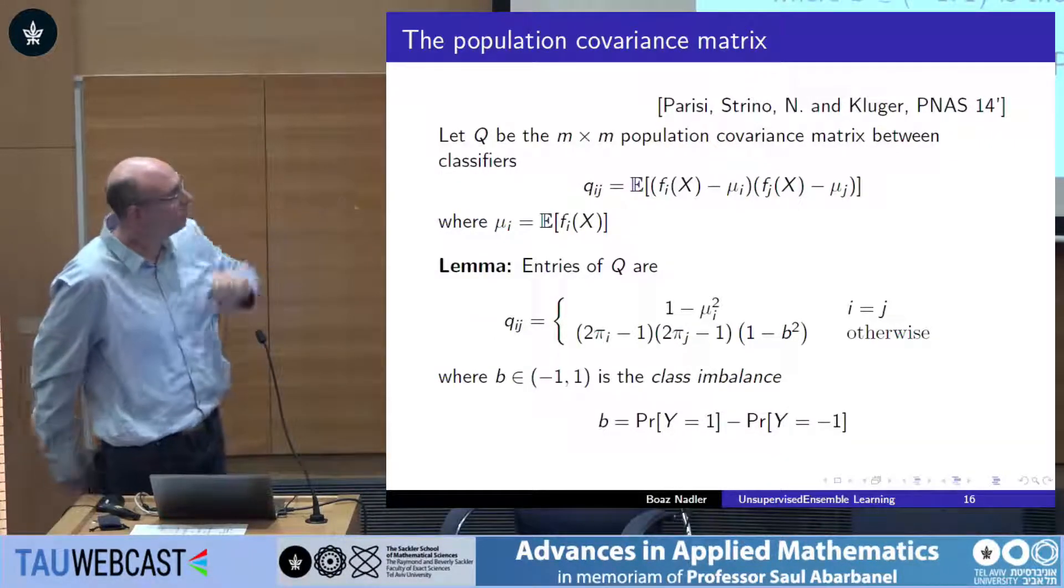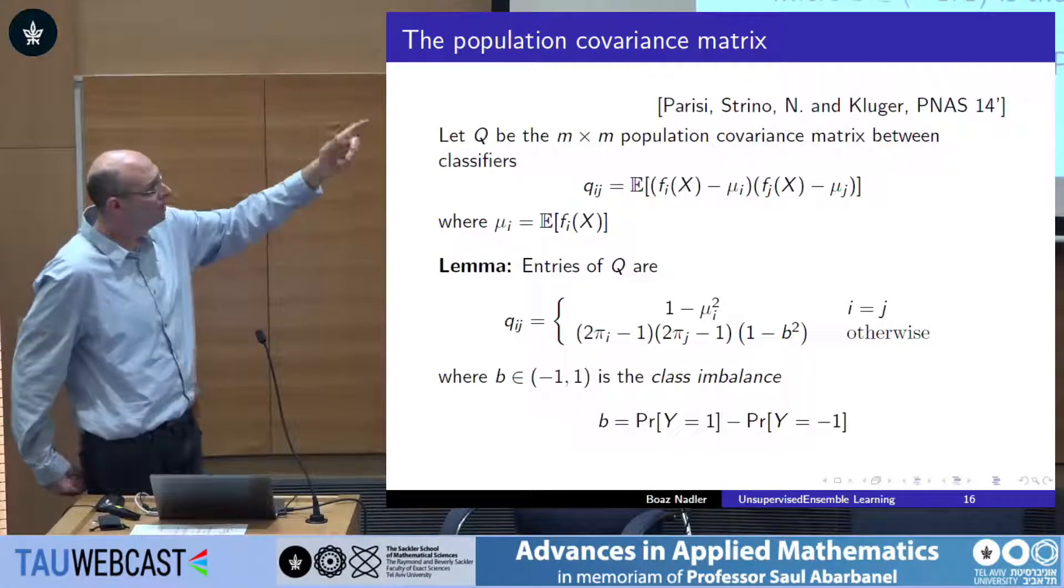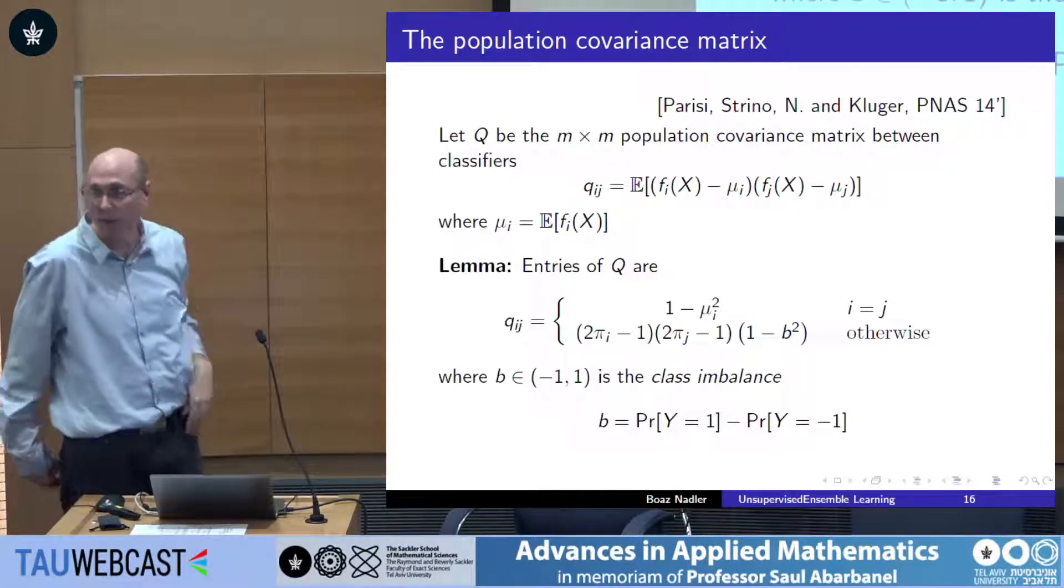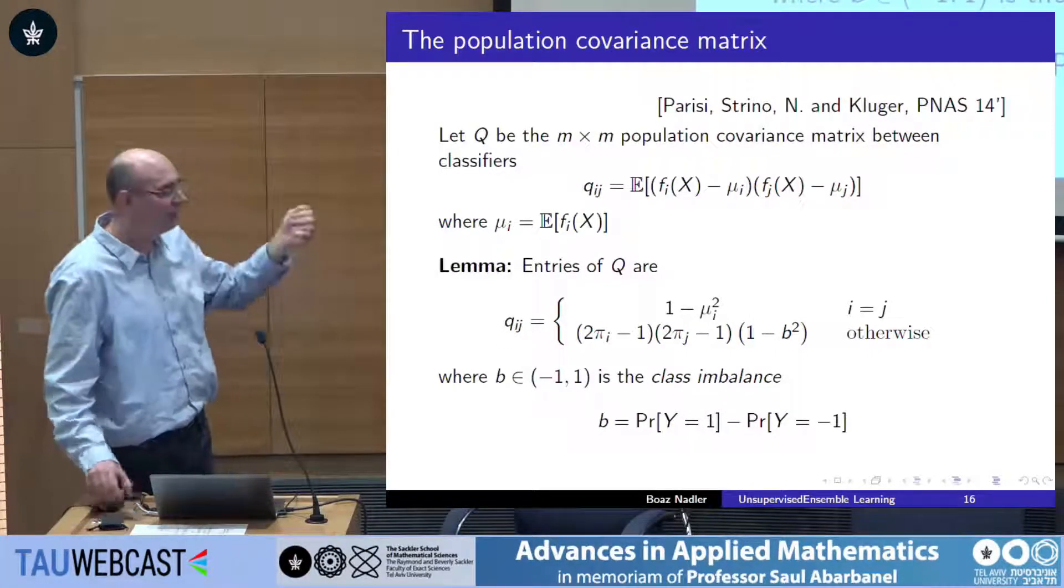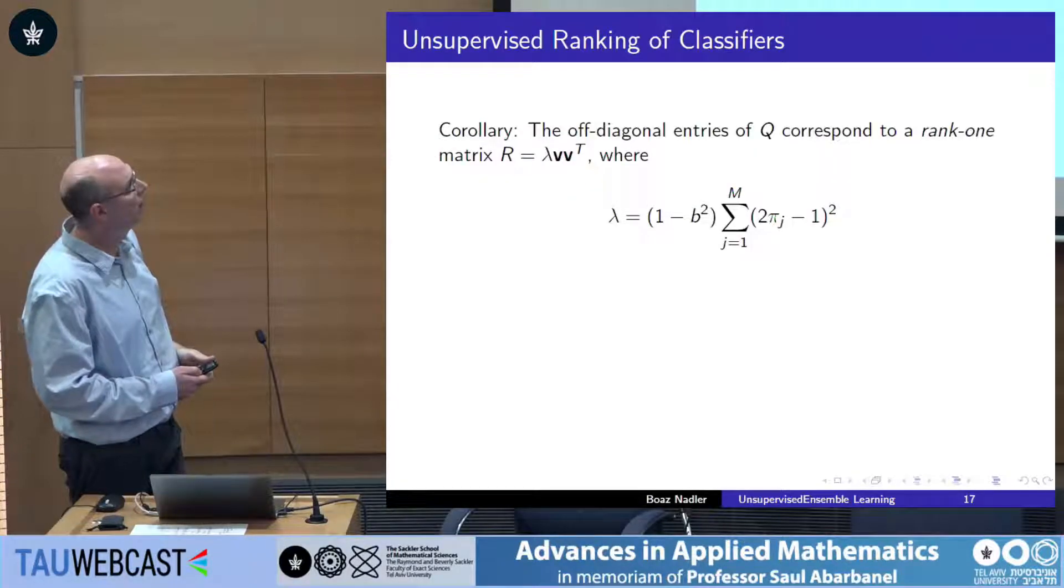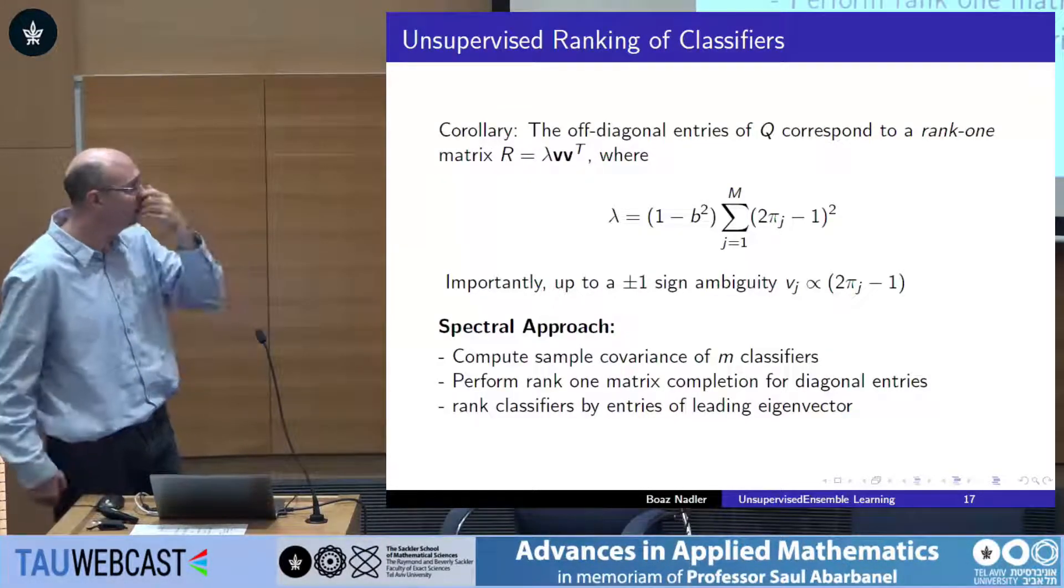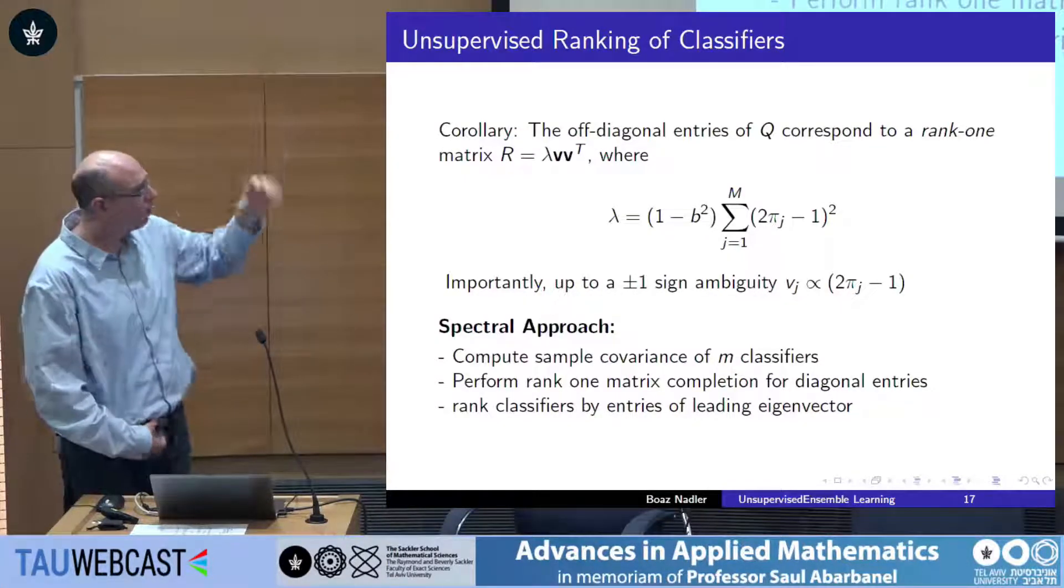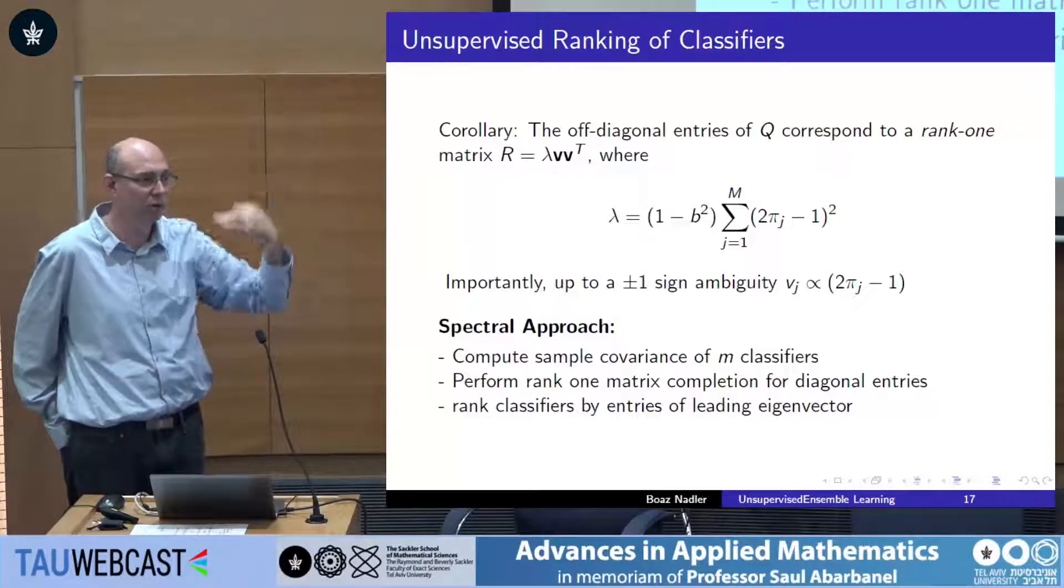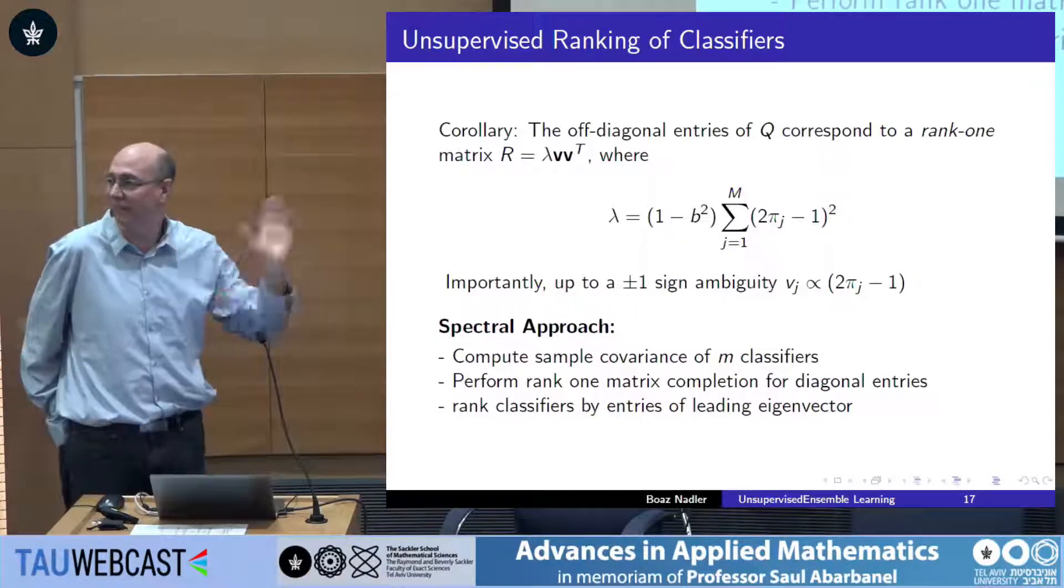And it turned out that this matrix, under this single assumption, has a very simple structure. It's written here. The exact details are not important. The important thing is that the off-diagonal entries have a very simple form. Pi, remember, is the balanced accuracy of the classifiers. And it's a rank-1 matrix. Q_ij is some v_i times some v_j times some constant. It doesn't matter. So it's a rank-1 matrix. And the eigenvector of this rank-1 matrix is precisely this vector of balanced accuracies. So here is what you can do. Compute the covariance matrix of the classifiers. You need to zero the diagonal. These are technical details. Compute the leading eigenvector. Sort its entries from largest to smallest. The largest one is the most expert classifier. You can either follow him or later on we'll show how you can combine them. But this is it.